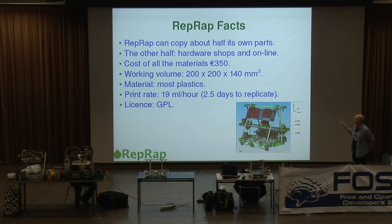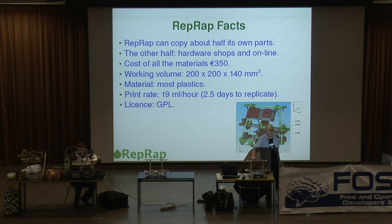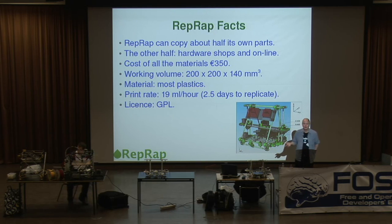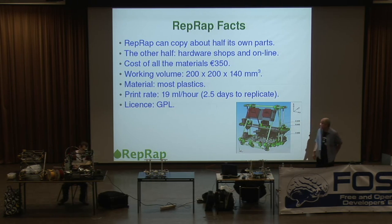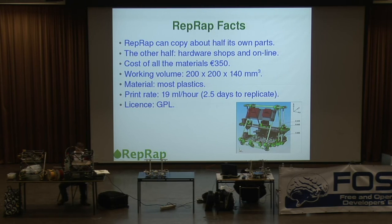It was deliberately designed so that the bits it can't make are very easy to obtain from hardware shops or from online stores. For example, these threaded rods here — they're M8 threaded rods, completely standard size, you can get those from a builder's merchant just down the road. These motors here are standard NEMA 17 stepper motors; they cost about €10 each. So everything in the machine that it can't make for itself has been designed to be as easily available as possible. If you want to put one together, the cost of all the materials is about €350.